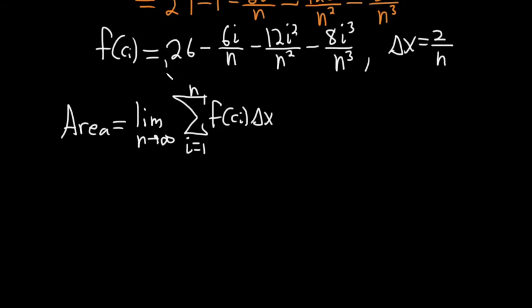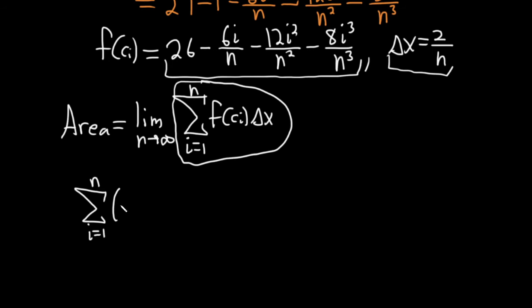So now we're going to focus on the sum and then at the very end we'll come back and take the limit. So the sum as i runs from 1 to n, f of c sub i we worked it out. It's 26 minus 6i over n minus 12i squared over n squared minus 8i cubed over n cubed, times delta x which is 2 over n. Very messy problem.